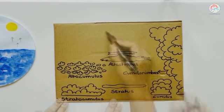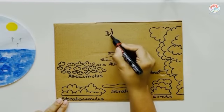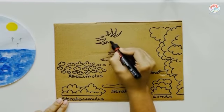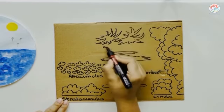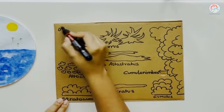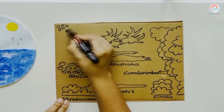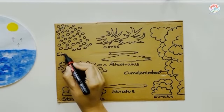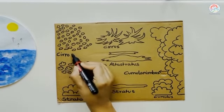The cumulonimbus clouds are present in all three layers and are responsible for thunder and lightning. The cirrocumulus or the cirrus are found above 18,000 feet.